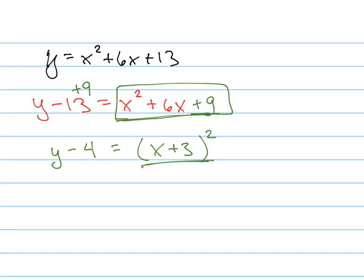So now if they wanted me to graph this, what I would do is I would see the vertex, right? The vertex is going to be negative 3. It's the opposite of this. And the opposite of this. Negative 3, 4 is my vertex. And a is 1, which means it's not stretched.